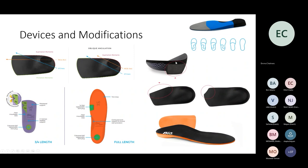For more pronated patients you can use hemi posts or medial wedging, and cutouts to the first MET or first ray to aid movement of the first metatarsal.